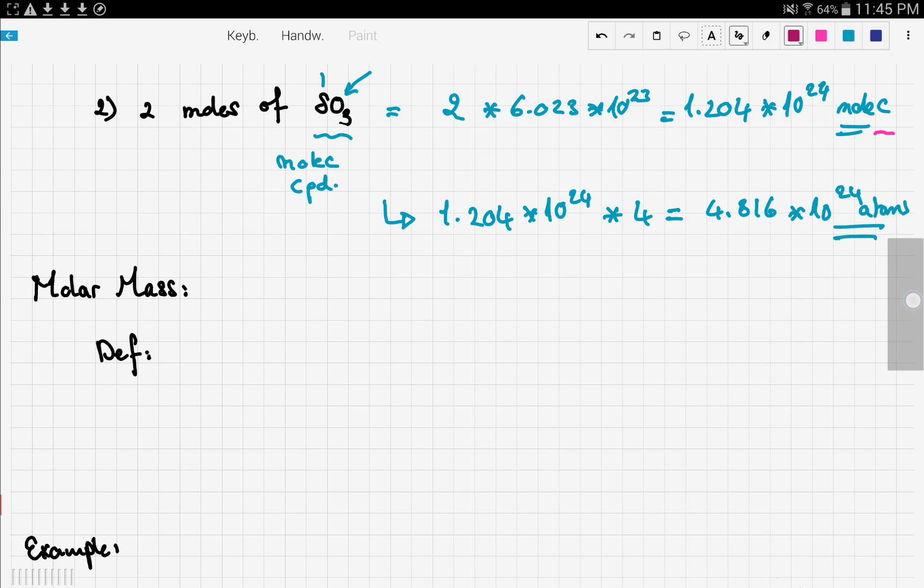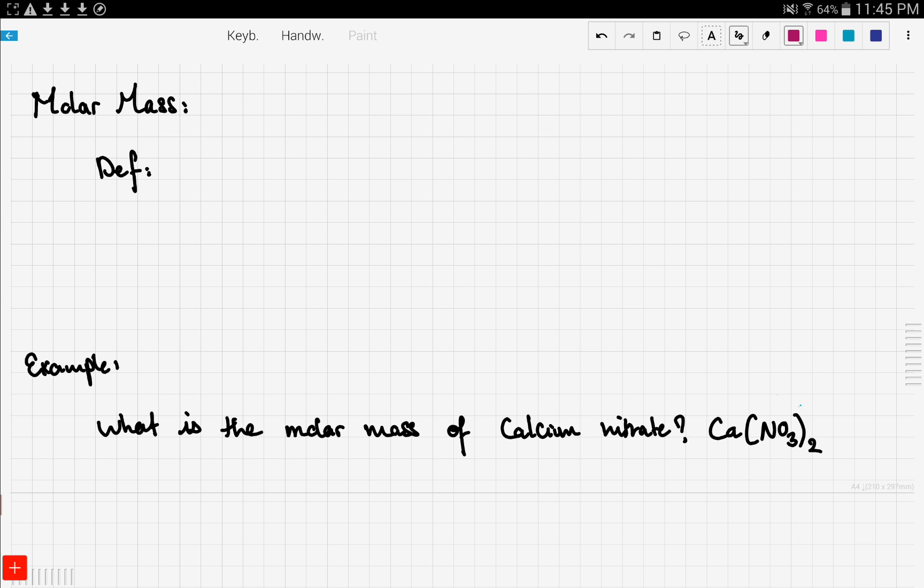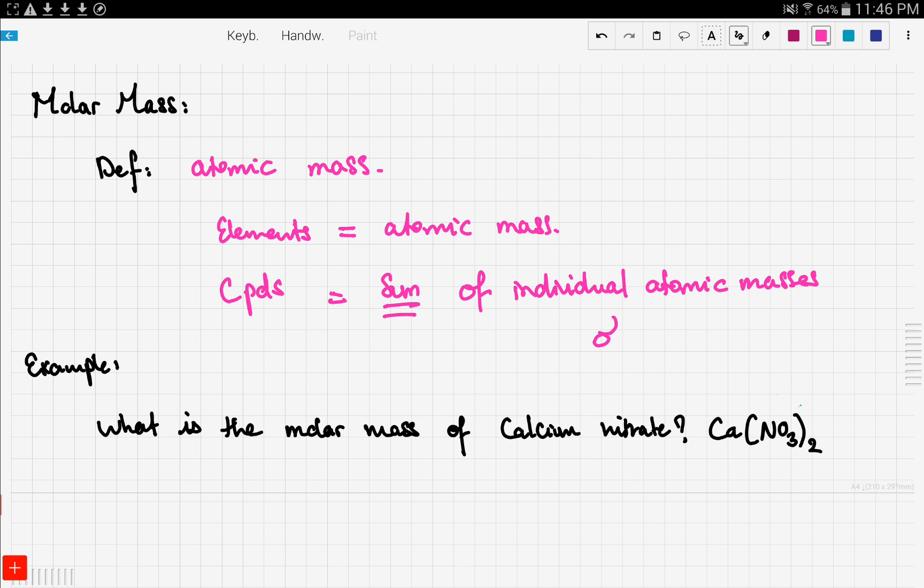Now let's move on to something very important in stoichiometry. And that is the molar mass. The molar mass is basically the atomic mass. But it differs. For elements it's equal to the atomic mass.